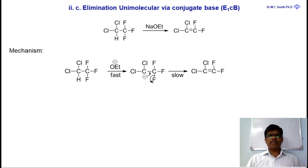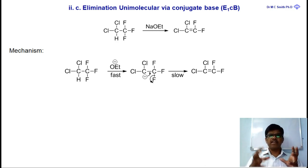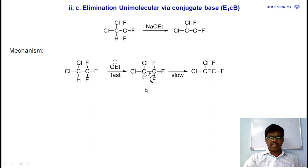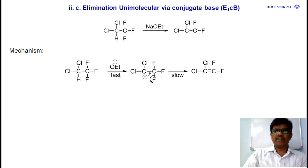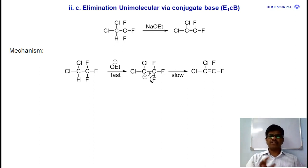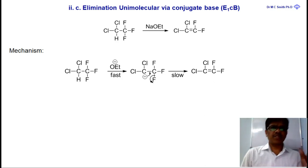E1cb (elimination unimolecular via conjugate base) reactions are important but found very rarely in organic chemistry. In E1cb, hydrogen is removed first to give a carbanion conjugate base as a slow step, and then the leaving group (e.g., fluoride) is eliminated to give the product such as dichlorodifluoroethylene.